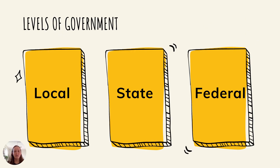Yesterday we talked about three levels of government. We have local, state, and federal. Federal being for the whole country, state for whichever state or territory we live in — for us that's New South Wales — and local being the region in which we live.